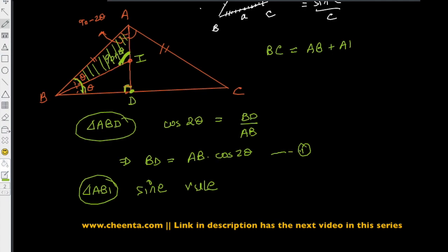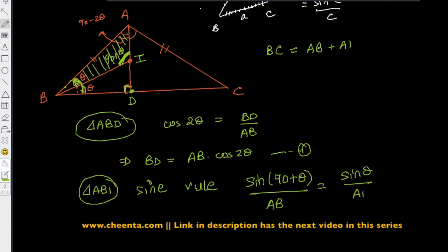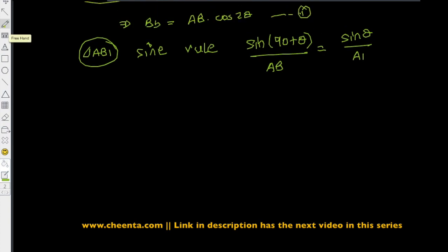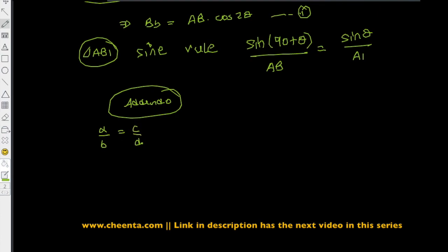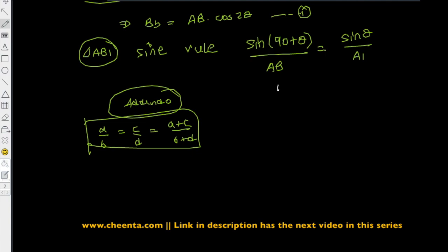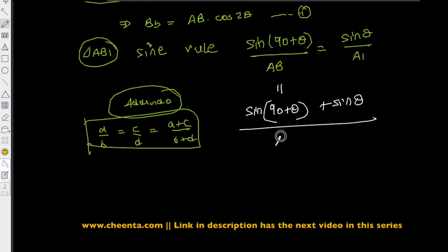In triangle ABI, applying the sine rule: sine of (90 plus theta) over AB equals sine of theta over AI, since this angle is theta and that angle is 90 plus theta. We will use a well-known proportionality rule called addendo, which says that if A over B equals C over D, then each ratio equals (A plus C) over (B plus D). Using that, each of these ratios equals (sine of (90 plus theta) plus sine theta) over (AB plus AI).